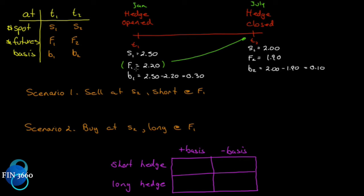An important clarification: when we say the futures price at t1 is $2.20, that's the current price of a futures contract with a delivery date close to t2 — for example, a July contract priced in January. It's not a separate thing; F1 is today's price of a contract expiring near t2. So: B1 = $2.50 − $2.20 = $0.30.